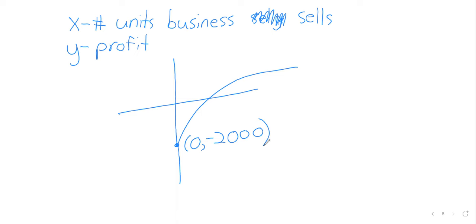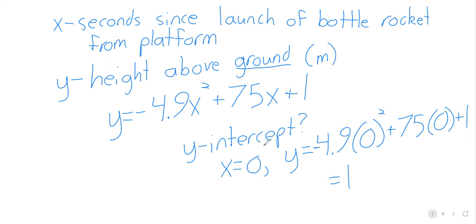And it is found always in the same way, by letting x be zero. Does anybody have questions about that as a concept? What shape does it make? Parabola. It makes a parabola. Does anybody have any questions about the y-intercept?